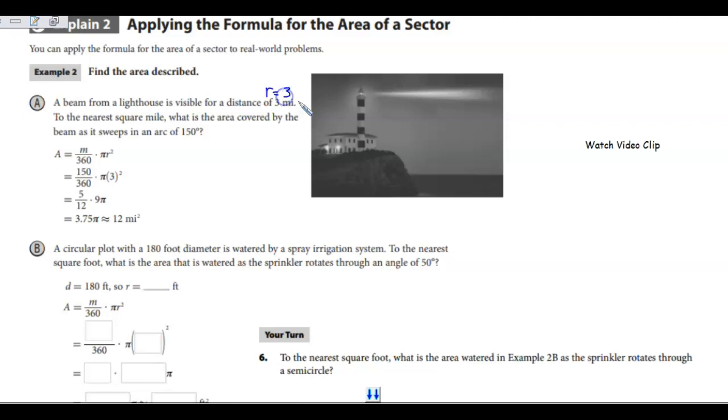They're telling us that the beam goes out for 3 miles, so that's our radius. Our radius is 3 miles. And then it tells us that the arc is 150 degrees.